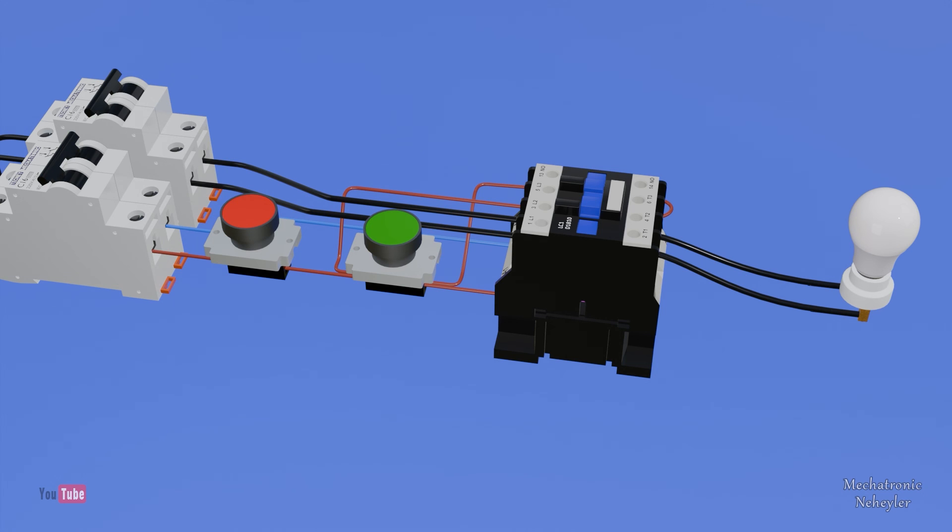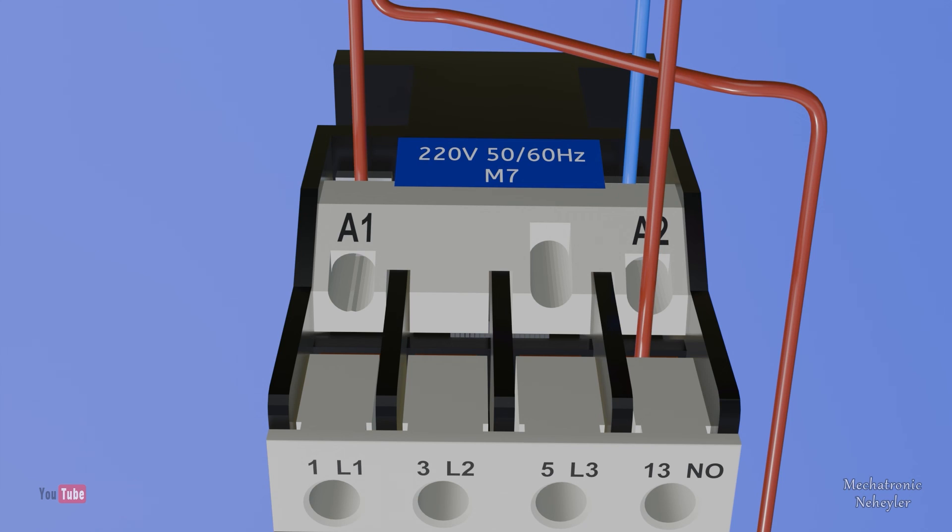Each contactor indicates how much the voltage and type of supply current should be in its coil. In this case it tells us that it must be connected to 220 volts alternating current. In other cases it may indicate another voltage level, be careful in this detail.